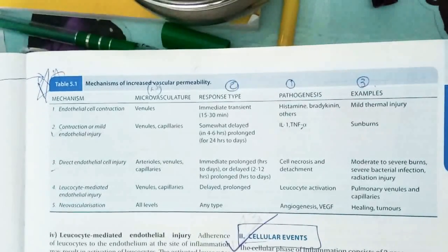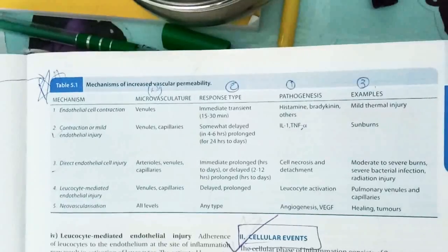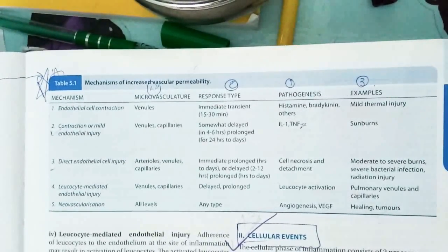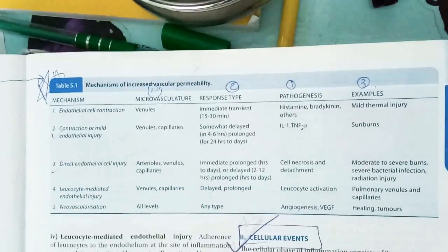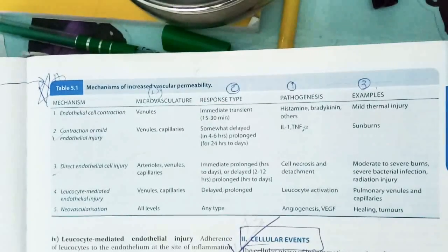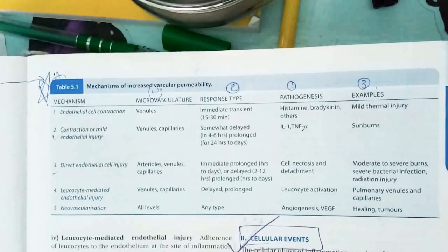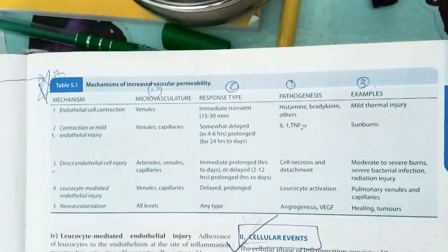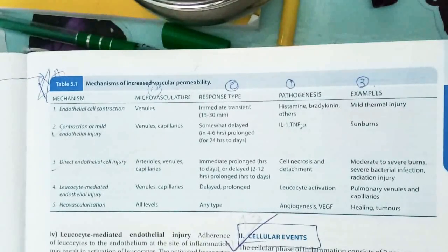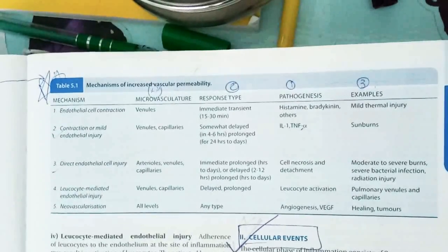Direct endothelial cell injury occurs in arterioles, venules, and capillaries; response can be immediate or delayed; pathogenesis involves cell necrosis and detachment; examples include moderate to severe burns, severe bacterial infection, and radiation injury. Leukocyte-mediated endothelial injury involves venules and capillaries, is delayed or prolonged, and pathogenesis is from leukocyte activation. Neovascularization involves all microvascular beds, any type of response, pathogenesis via angiogenesis and VEGF; examples include healing and tumor.